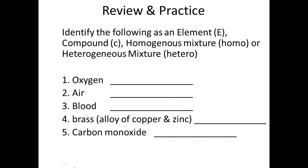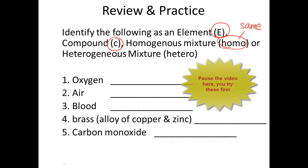Let's look at this a little bit. We're going to sort these out into elements. We're going to use the letter E for element. C for compound. If it's a homogenous mixture, meaning it has a uniform composition throughout, we're going to write homo. Homo means same. And if it's a heterogeneous mixture, meaning that it has different components that you can identify, we're going to use the term hetero, meaning different.